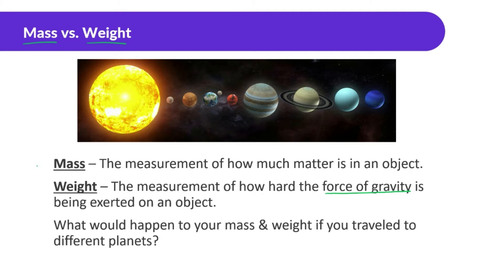A lot of times mass and weight relate to each other. However, weight is completely dependent on the force of gravity. So what would happen to your mass and weight if you traveled to different planets? Here on Earth, the gravitational pull has an acceleration of around 10 meters per second squared. But if you went to different planets or the moon, you wouldn't weigh as much because there's less gravity. If you went to bigger planets like Neptune, you'd have a much bigger pull because the gravity is greater there.